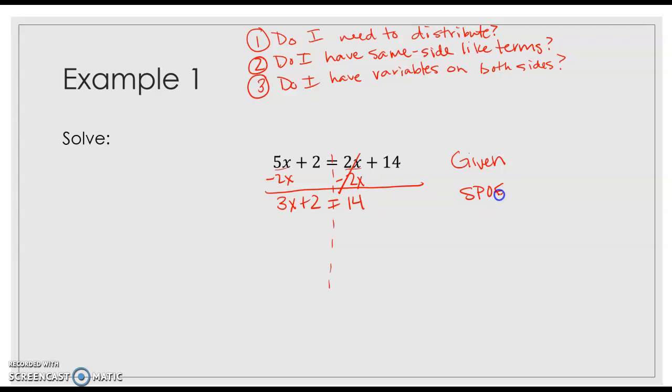And so, I did a subtraction property of equality. What that means is, we will most likely have either two SPOEs or two APOEs or an SPOE and an APOE when we're solving these equations. Just to be aware, because, technically, these constants, this two and this 14, those are like terms. And so, I'm going to move them. Now, the one thing I did not say, I automatically move the two. Because, in my mind, I take the smallest number and I move it.